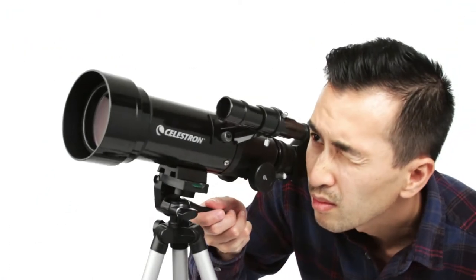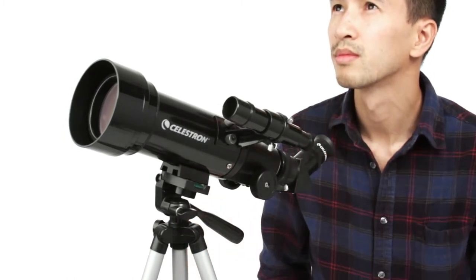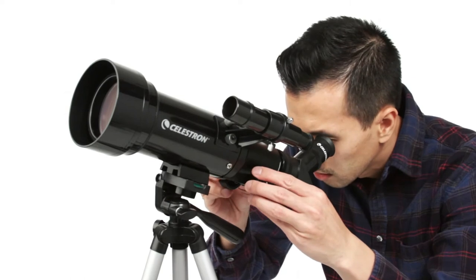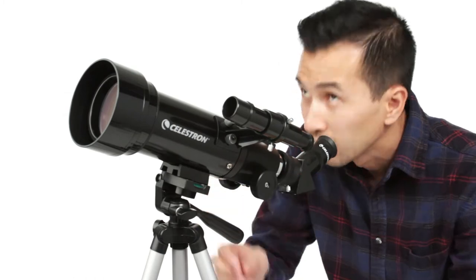To view objects, first center them in the 2x20 optical finder scope, then get a closer look using either the low or high-power eyepiece. Simply turn the knobs to bring your subjects into sharp focus.